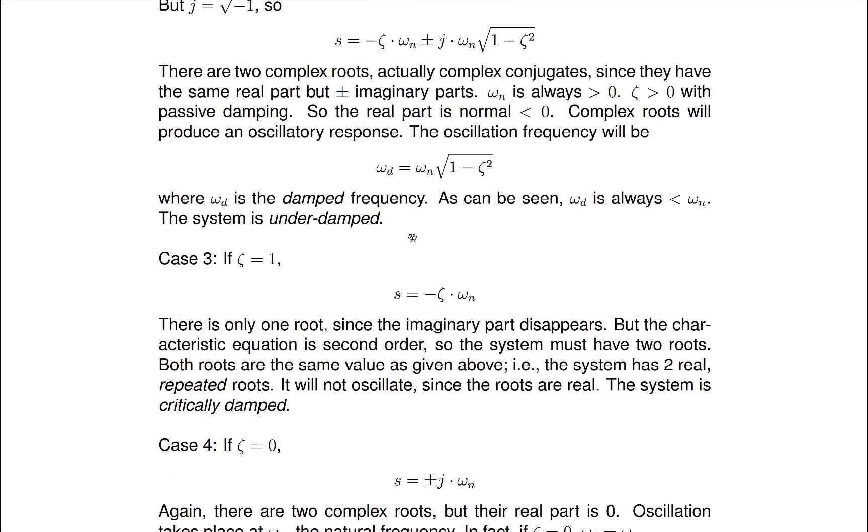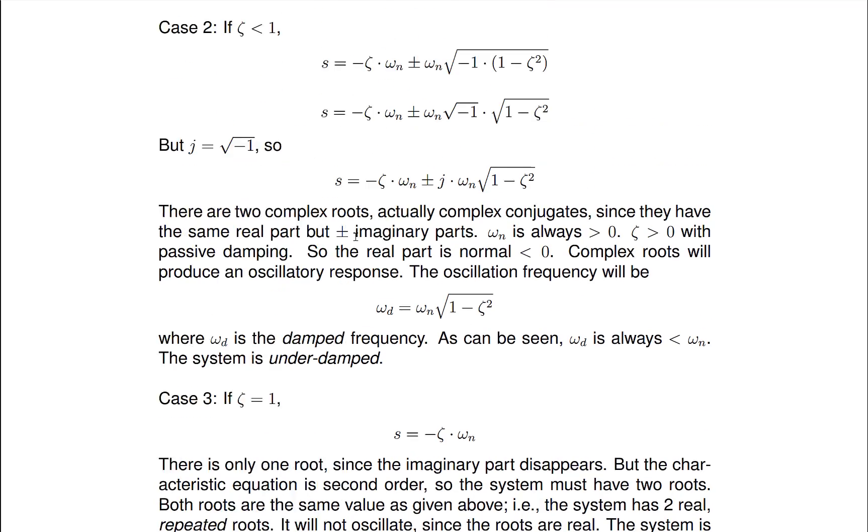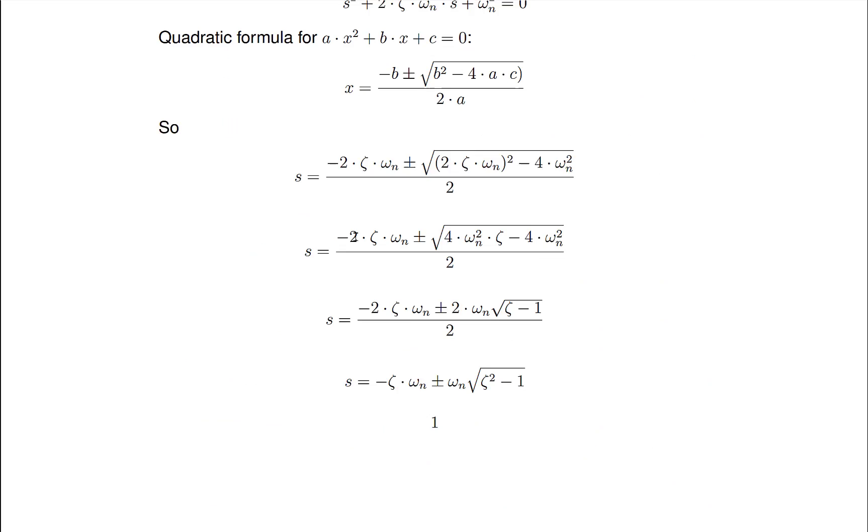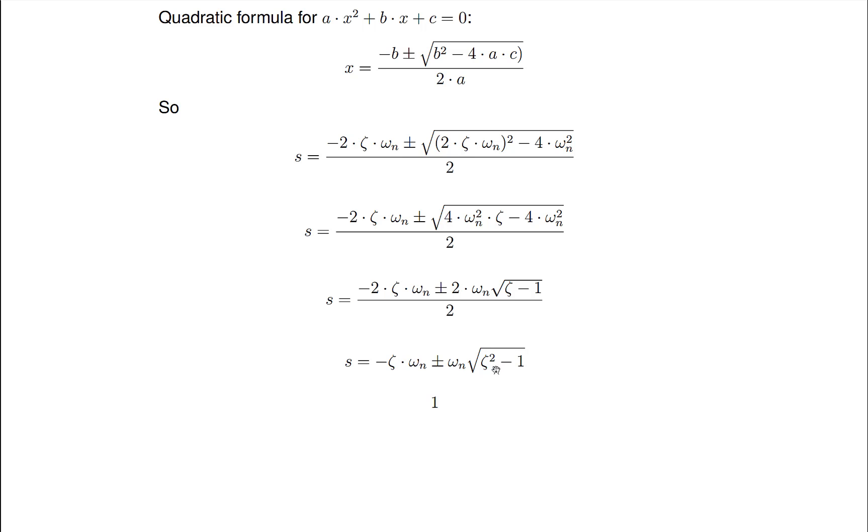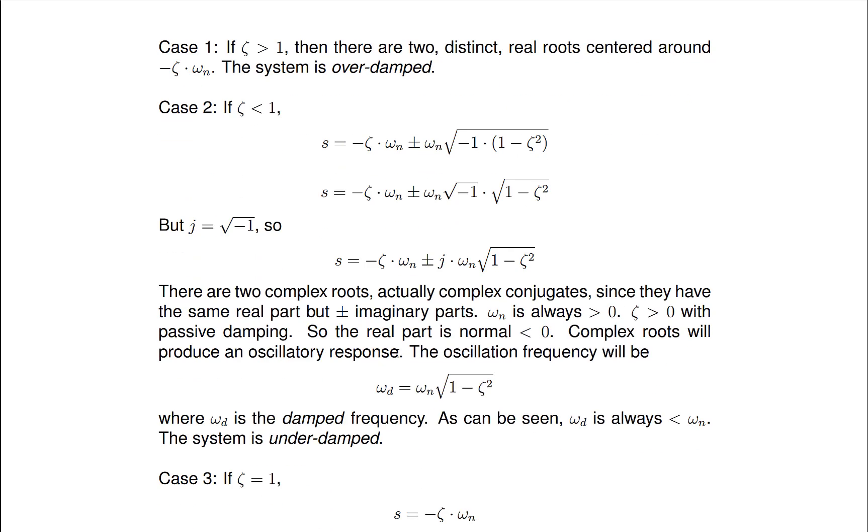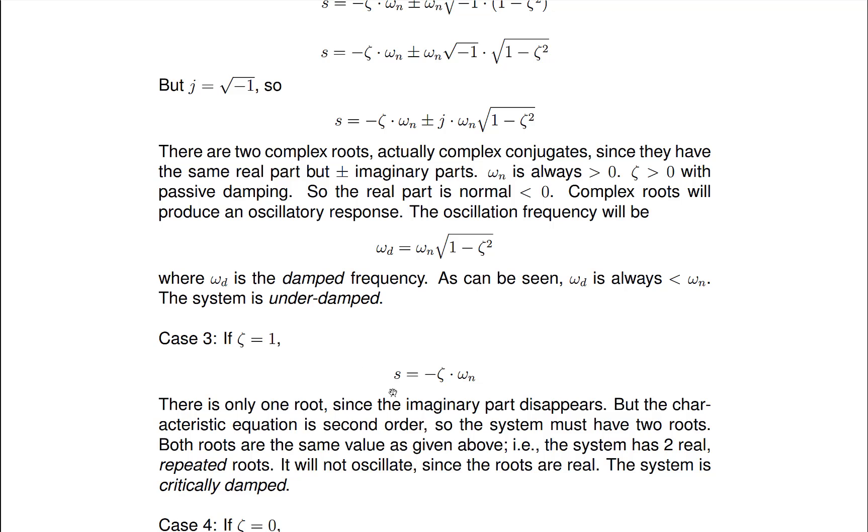Now we have some other cases that are interesting. If zeta is equal to 1, let's go back up to our original equation, which was here. If zeta is equal to 1, this disappears here. And of course that goes away too. So we wind up with this here. I should have taken the zeta out because zeta is equal to 1. So we wind up with a real root at omega n.